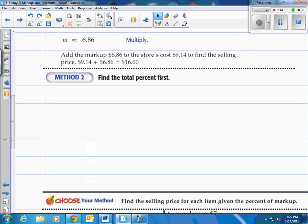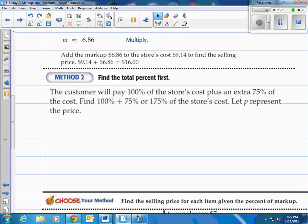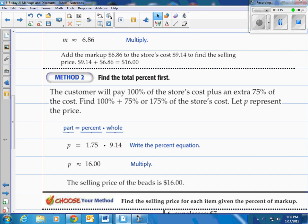Now I like method number two better because it's faster to add up the percent before instead of adding at the end with the dollar amounts. It says find the total percents first. We as the customers will pay 100% of the store's cost plus an extra 75% of the cost. So we pay that wholesale cost plus the 75% markup. So we end up paying 175% of the store's cost. Let P represent the price. When we take that part equaling the percent times the whole, we have P being the price. Take 175% change it to a decimal, so it's 1.75 times $9.14. When you do that on your calculator you get $16 automatically. You don't have to add at the end. It adds it all together. It takes that whole and adds on that part, the 75% that you want. So the selling price of the beads is $16 as we knew before.